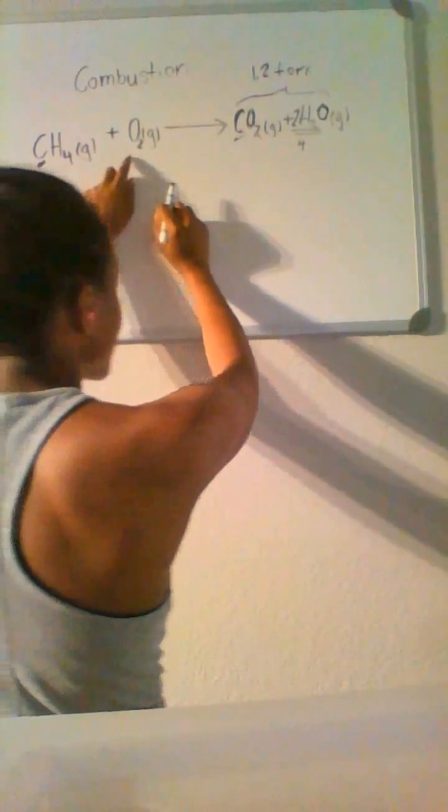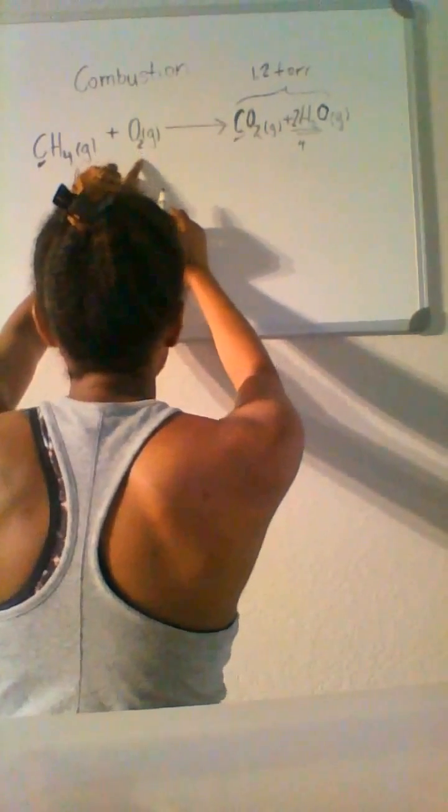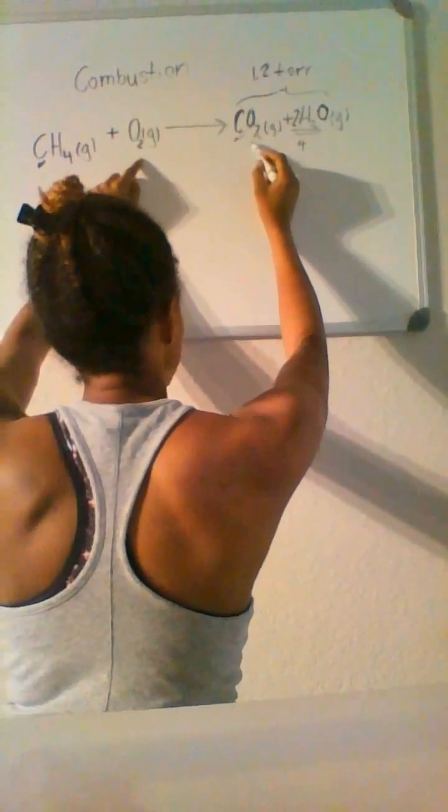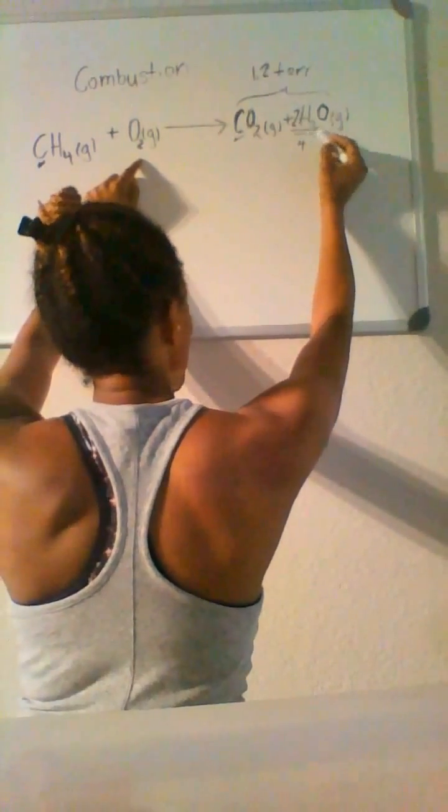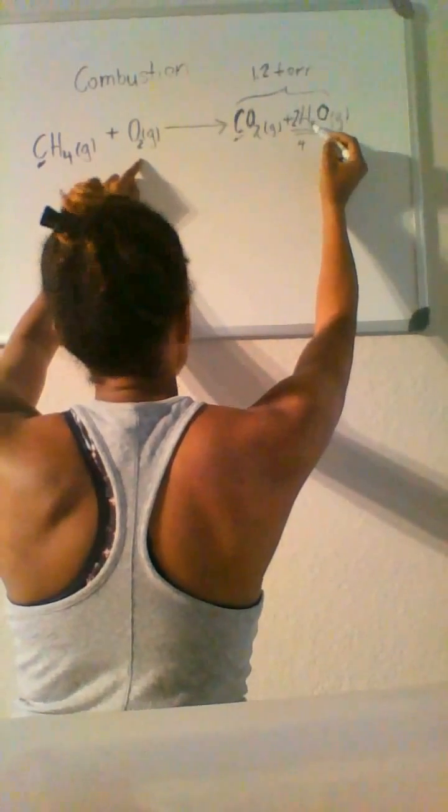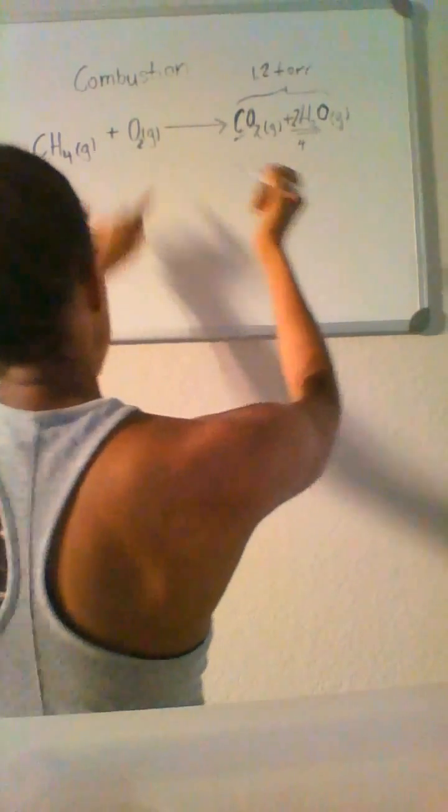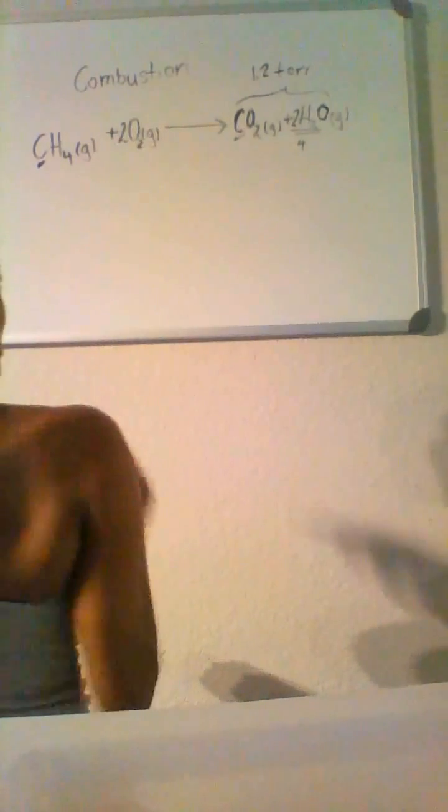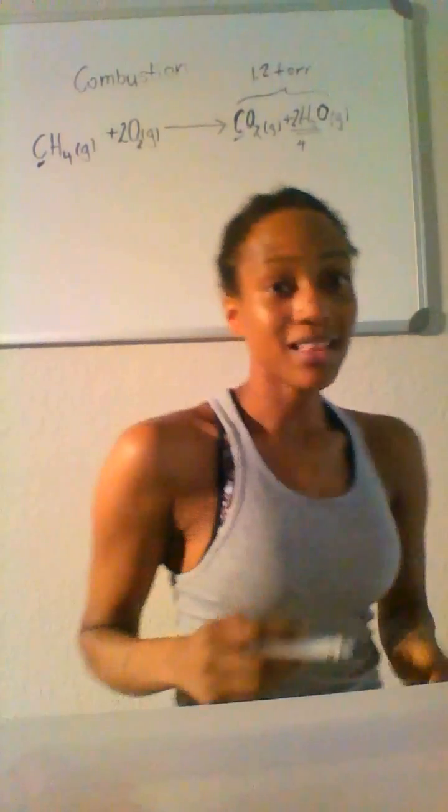Now we have to balance our oxygens. We have two on the reactant side, two here in the carbon dioxide, and two in H2O—well, two in two molecules of H2O. Therefore, we have the critical coefficient of two. And now our combustion reaction is balanced.